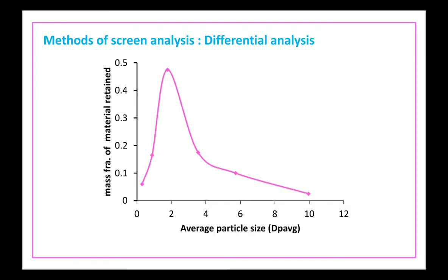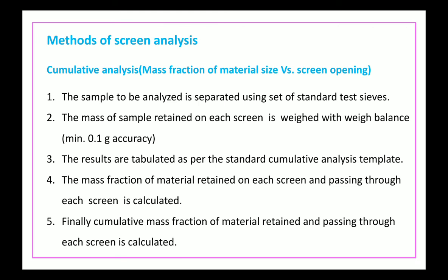The second method is cumulative analysis. Cumulative means total. It is expressed as mass fraction of material retained versus screen opening. The procedure is the same data obtained after screening using a set of standard screens is analyzed by mathematical manipulation. The sample is separated using a set of standard sieves, the mass of sample retained on each screen is weighed with a balance, and the results are tabulated as per the standard cumulative analysis template. The mass fraction of material retained on each screen and passing through each screen is calculated.